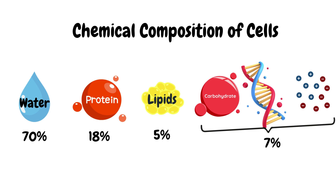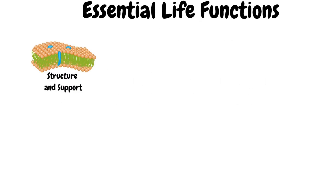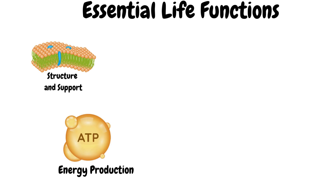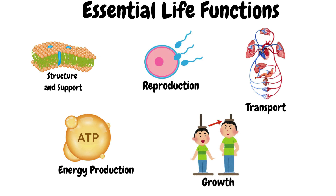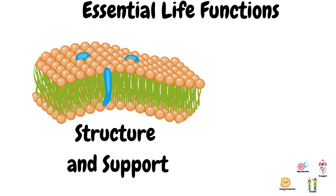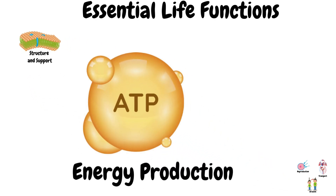Now that you have learned about the individual components of the cell, let's take a look at how they work together to perform the essential functions of life. These include structure and support, energy production, transport, growth, and reproduction. Cells are the structural units of all organisms and provide structure and support. Through processes like respiration and photosynthesis, the cell produces energy needed for all life activities.